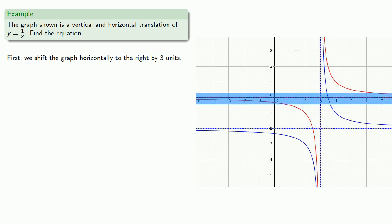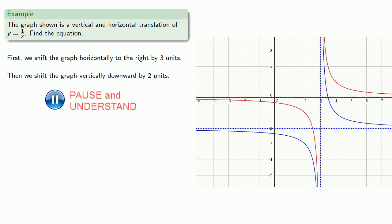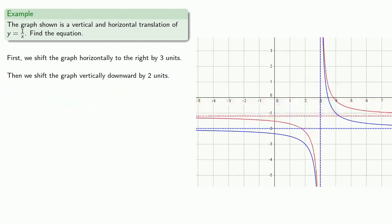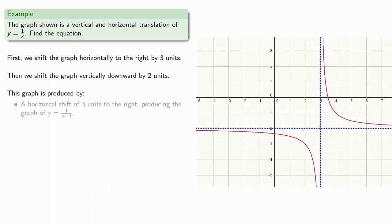We also have a horizontal asymptote of y = 0. To get that in the right place, we need to shift down by 2 units. So this graph is produced by a horizontal shift of 3 units to the right, giving y = 1/(x - 3), then a vertical shift of 2 units downward, giving y = 1/(x - 3) - 2.